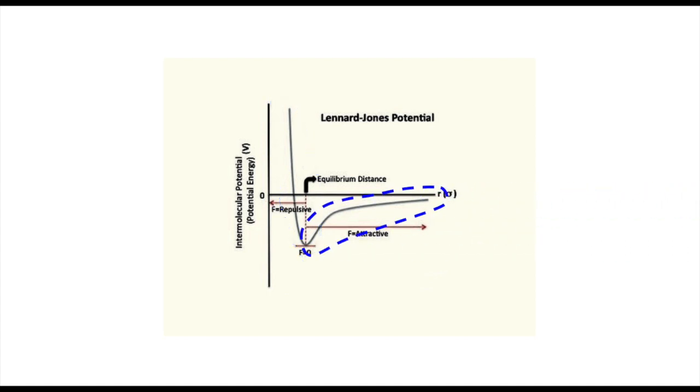Next, the attractive part. At longer distances, the atoms experience an attractive force due to van der Waals interactions. This is represented by the gentle dip on the right side of the graph. The attraction is proportional to 1 over the distance to the power of 6.